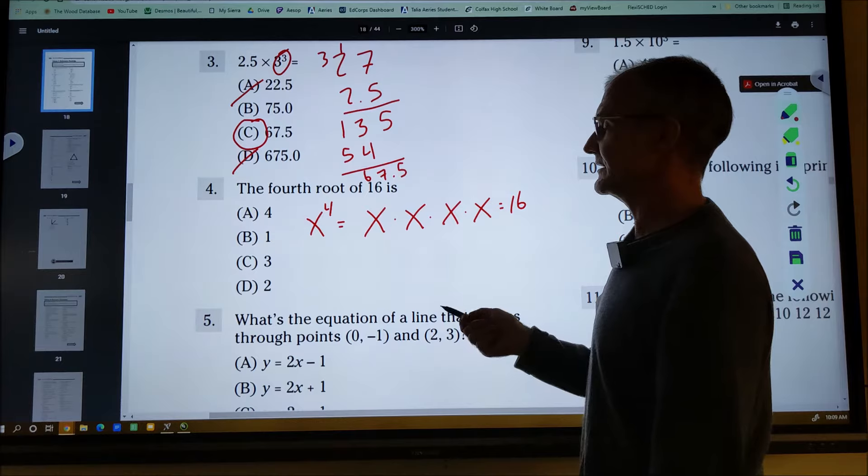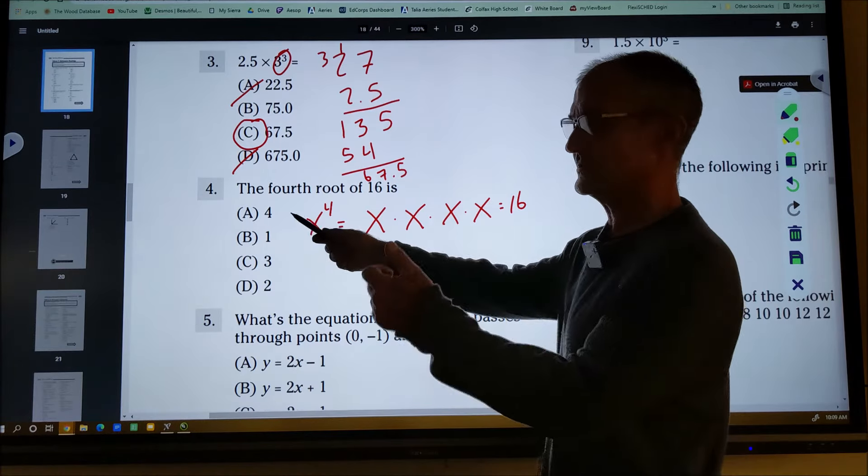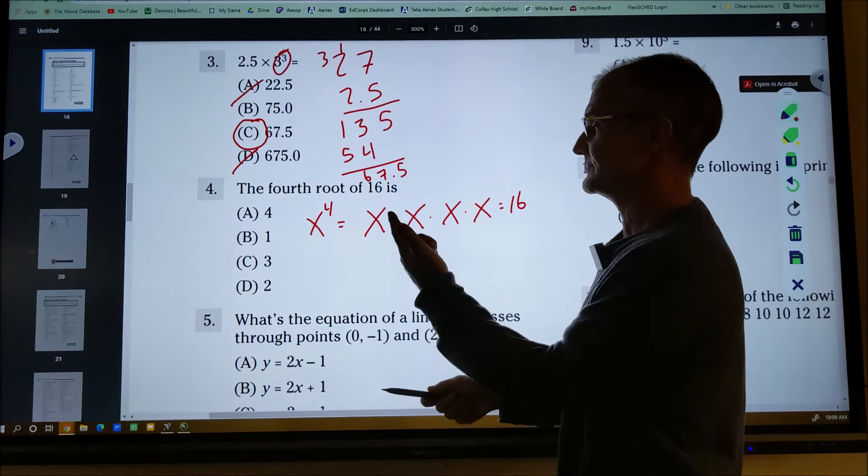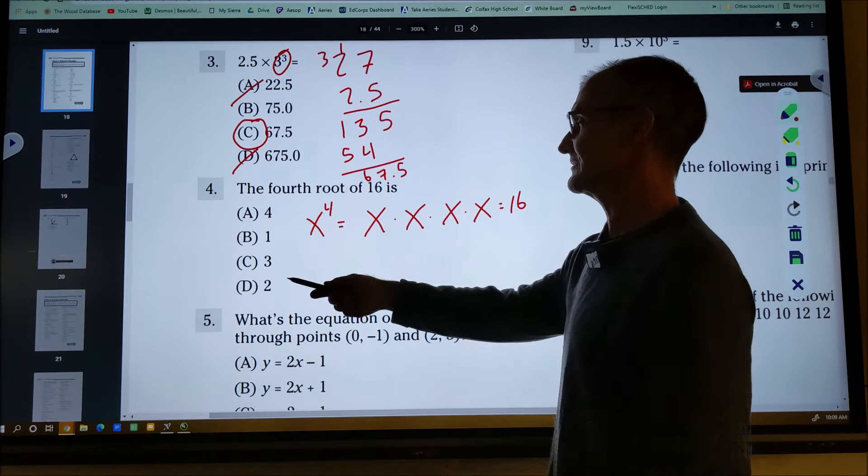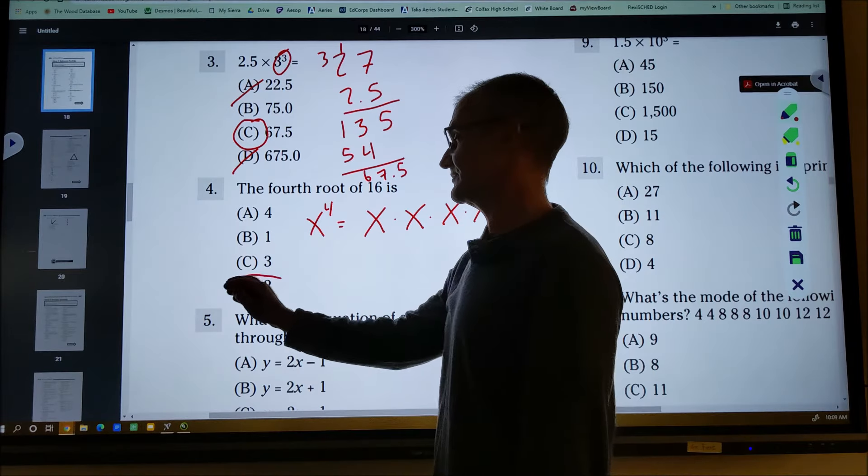So you probably run that in your head pretty quick. If you're trying four, four times four, 16. It can't be that. It has to be less than four. Three is an odd number. Three, nine. That's not going to work. One's not going to work. So two is the only one that's going to work.